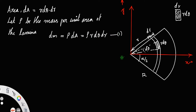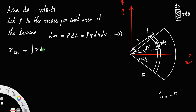Since this lamina is symmetric about the x-axis, y_cm is definitely equal to 0. You do not have to find the y coordinate of the center of mass, since it is symmetric about the x-axis, y_cm equals 0. For the x_cm, it is equal to the integral of x dm divided by the integral of dm.